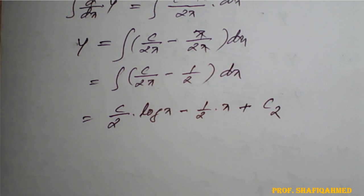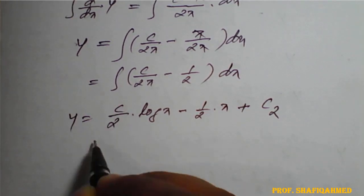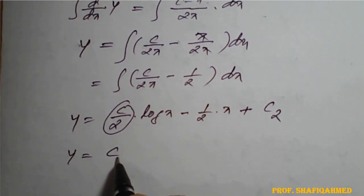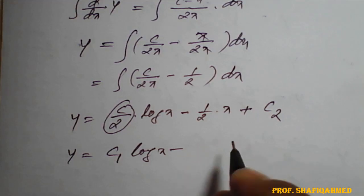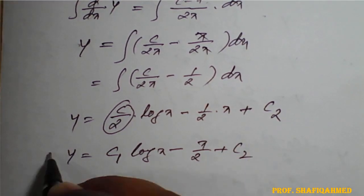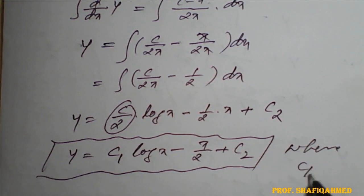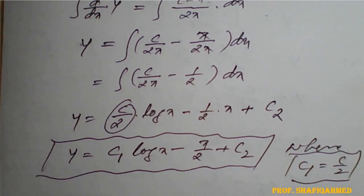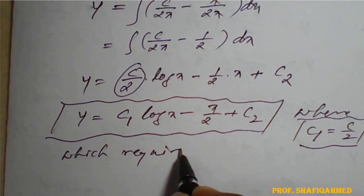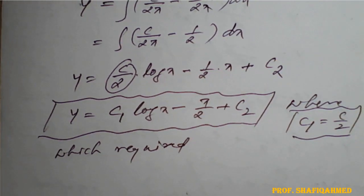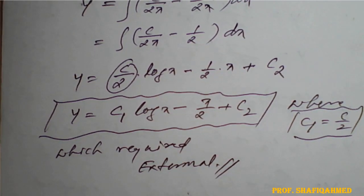On final simplification, y equals c by 2 — I will consider as c1 — log of x, minus x upon 2, plus c2, which is the required extremal, where c1 is nothing but c by 2. This substitution gives us the required extremal. In this way we need to simplify the problems.